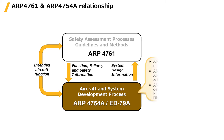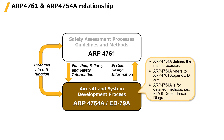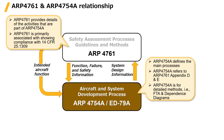4754A defines the main processes related to development while 4761 defines the details of the activities. It is easily understood that the large piece is 4754A and the small part is 4761. 4754A refers to 4761 for details on the activities — for instance, for fault tree analysis and dependency diagrams, 4754A refers to 4761 Appendix D and E.